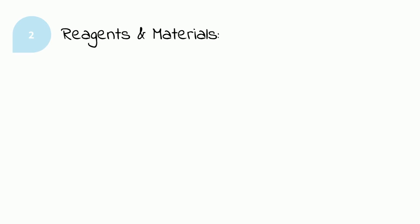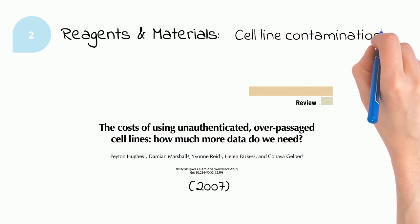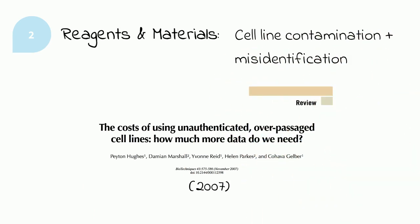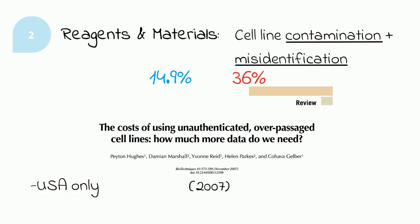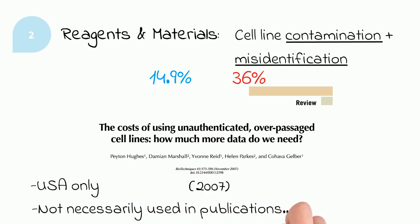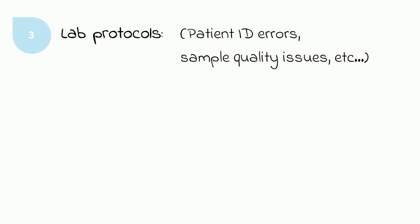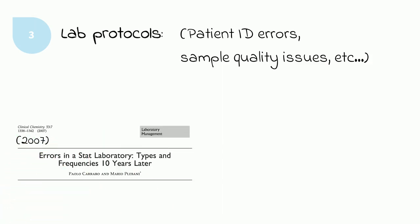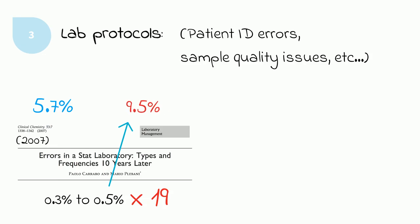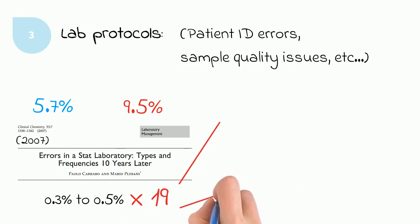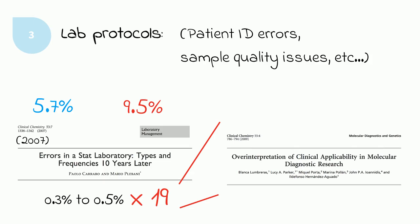For biological reagents and reference materials, they used a 2007 review on cell line contamination or misidentification. 14.9 to 36% of cell lines assessed were either contaminated or falsely identified, though this is only including U.S. data and the cell lines assessed were not necessarily used in published papers. For lab protocols, they took the low and high estimates of error from a 2007 clinical study — just 0.3 to 0.5% — but then multiplied by 19 in an attempt to account for the difference between clinical and preclinical studies. This number comes from another study that found that papers from lab settings had a tendency to over-interpret the clinical applicability of their findings nearly 19 times more often than papers from clinical settings.